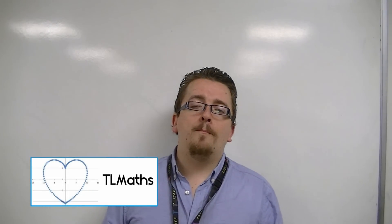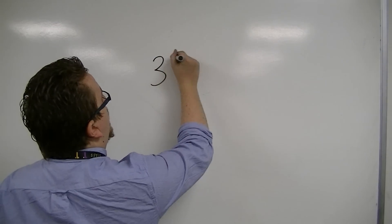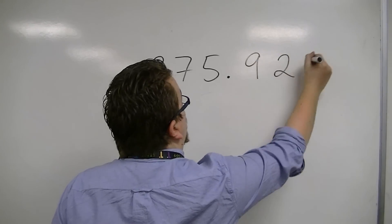In this video, we're going to look at place value. So if we start off with a number like 375.921,